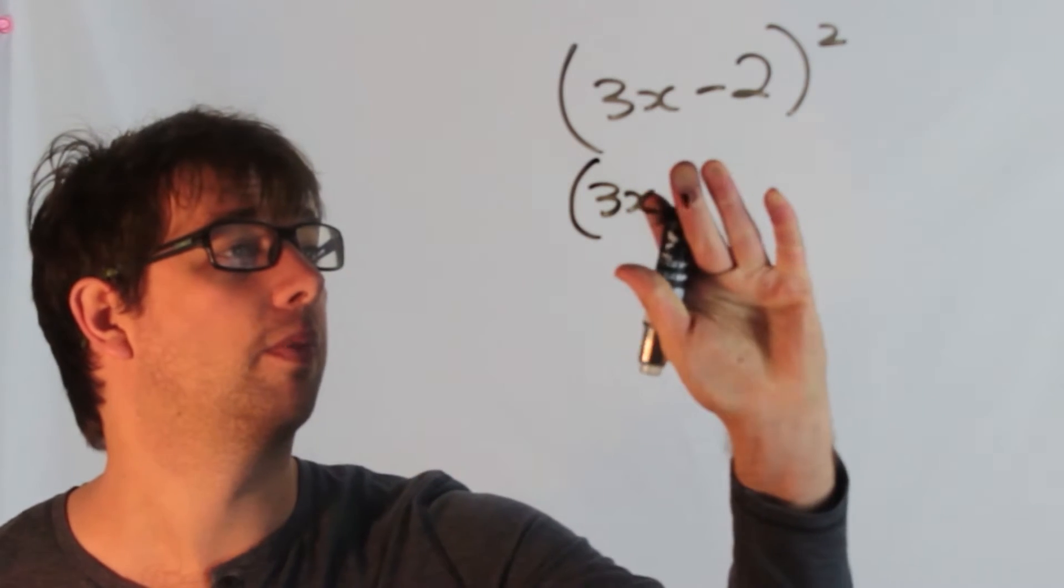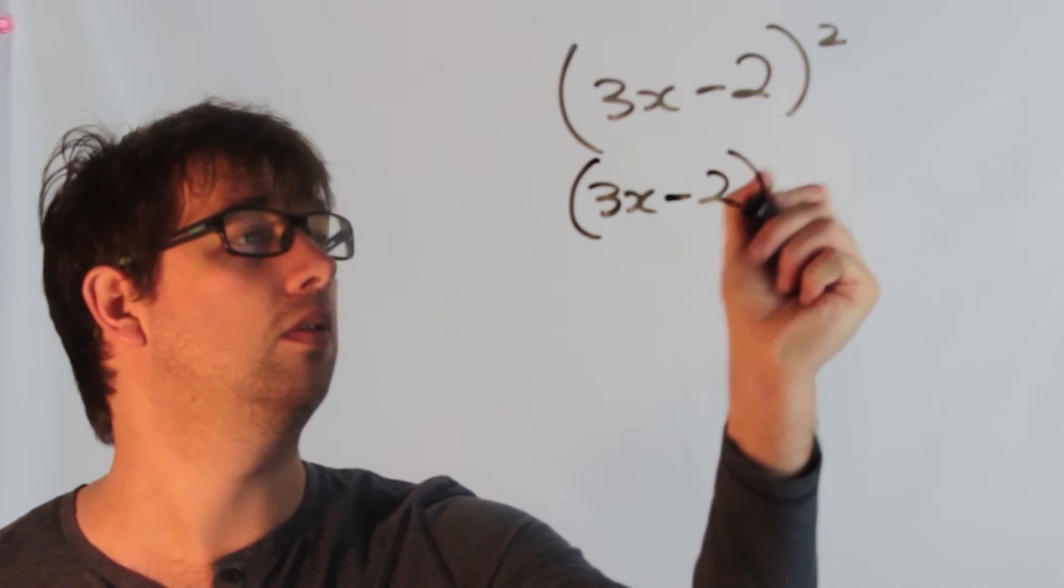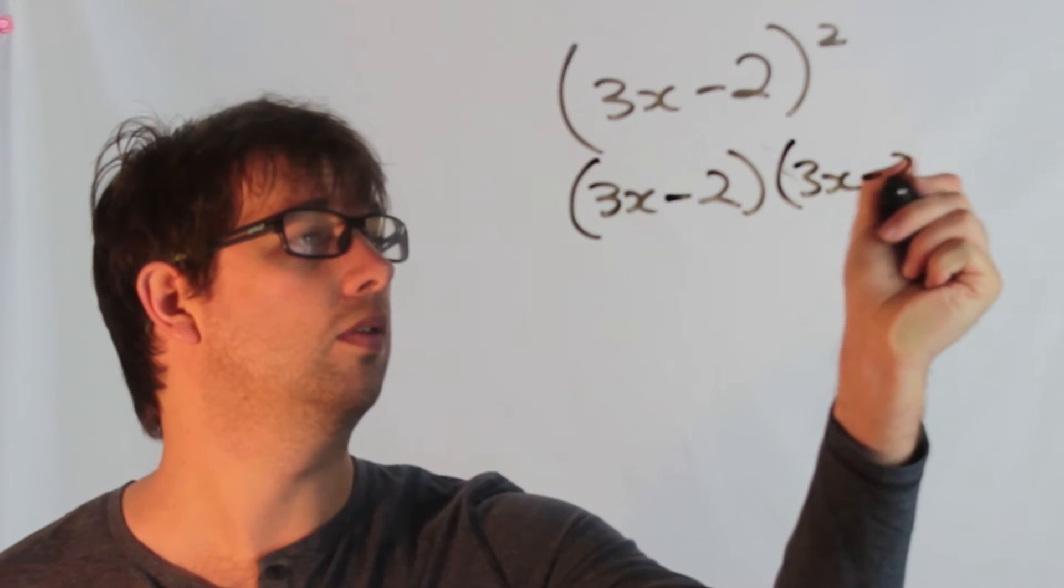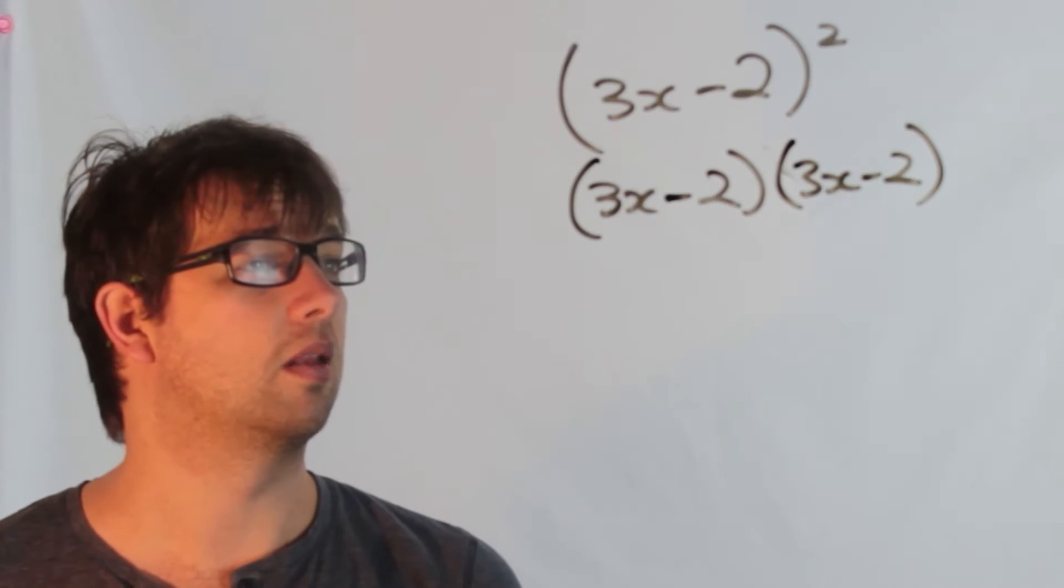So 3x, not plus, it's minus 2. I just did that. Here we go, 3x minus 2 and we can expand the brackets.